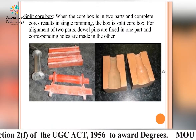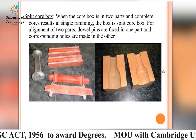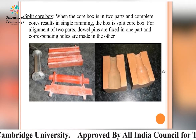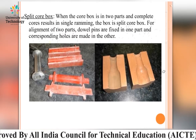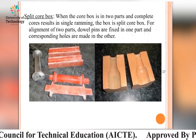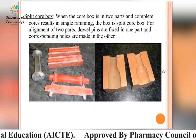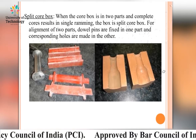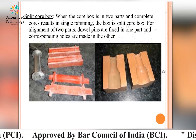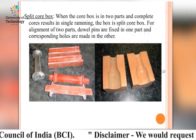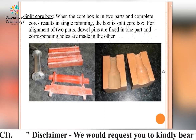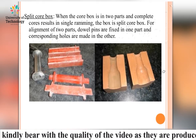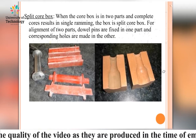The split core box: when the core box is in two parts and a complete core results from a single ramming, the box is called a split core box. For alignment of the two parts, dowel pins are fixed in one part and corresponding holes are made in the other part. We can see the figure of split core boxes in the slide.